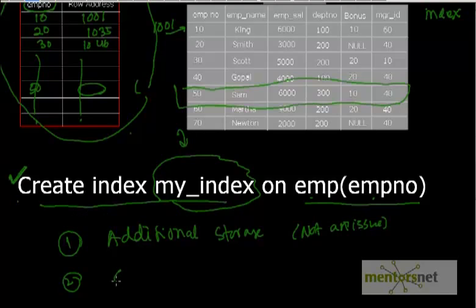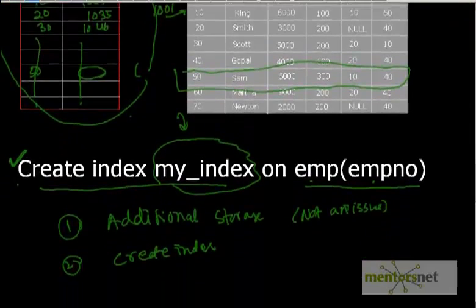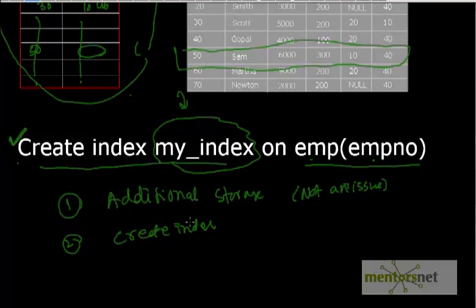The second issue is that someone has to execute the CREATE INDEX statement after the table is created. You also need to figure out which column to index — if you create an index on employee_number but query on department_number, a full table scan still happens. But this is a one-time job and manageable once you understand your use case, workload, and data volume.